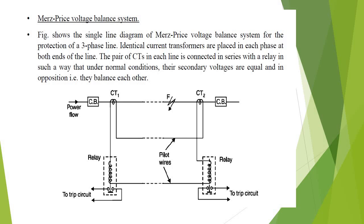Under healthy conditions, the current entering the line at one end is equal to that leaving at the other end. Therefore, equal and opposite voltages are induced in the secondaries of the CTs at both ends, and as a result, no current flows through the relay.